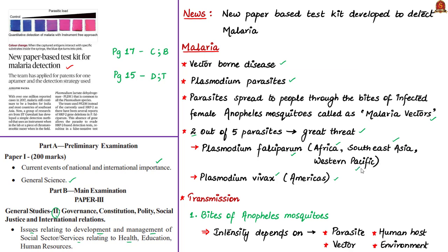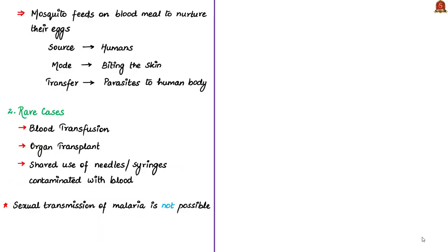Let us see how malaria is transmitted to human beings. In most cases, malaria is transmitted through the bites of female Anopheles mosquitoes, which bite between dusk and dawn. The intensity of transmission depends on factors related to the parasite, the vector, the human host and the environment. Anopheles mosquitoes lay their eggs in water, which hatch into larvae and eventually emerge as adult mosquitoes. The female mosquitoes seek a blood meal to nurture their eggs, which is how they bite human beings.